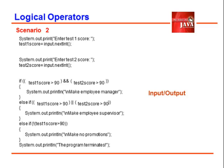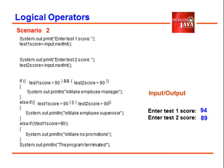Let us proceed on scenario two. We prompt again the user to enter test one score, we enter 94. We store 94 on test one score. Prompt the user to enter test two score, we entered 89. We stored 89 on test two score.